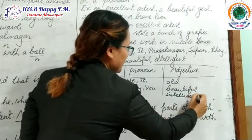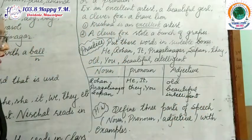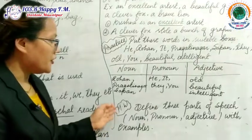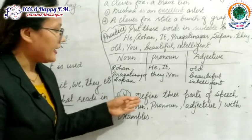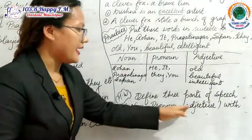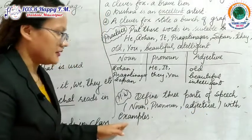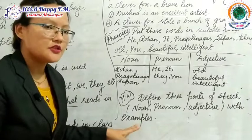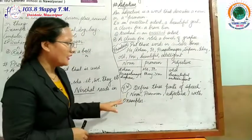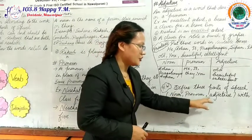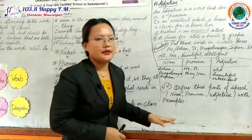Well done dear students, you have done very nicely. Now let's see our homework. Your homework is to define three parts of speech — noun, pronoun, and adjective — with examples. Today we know that there are eight parts of speech, but today we have learned only three parts. So you will describe noun, pronoun, and adjective with examples. Thank you.